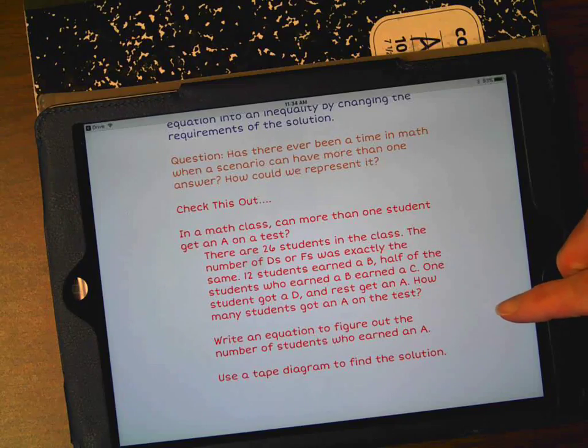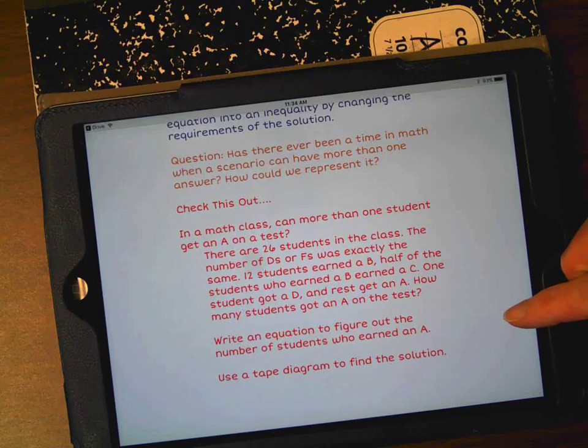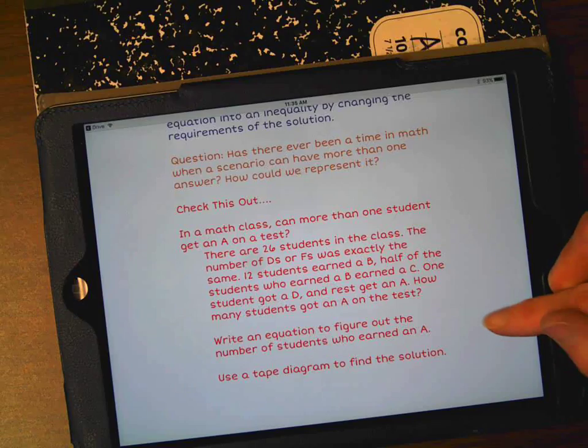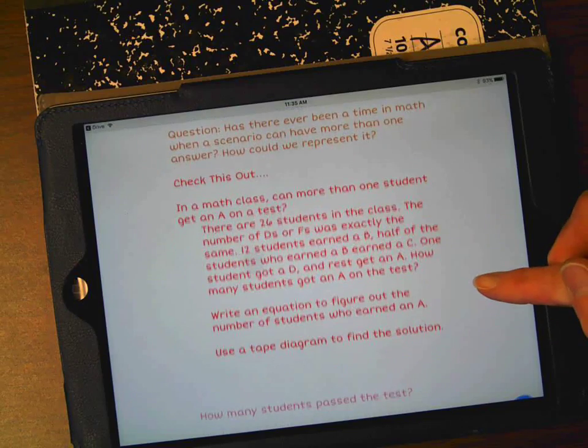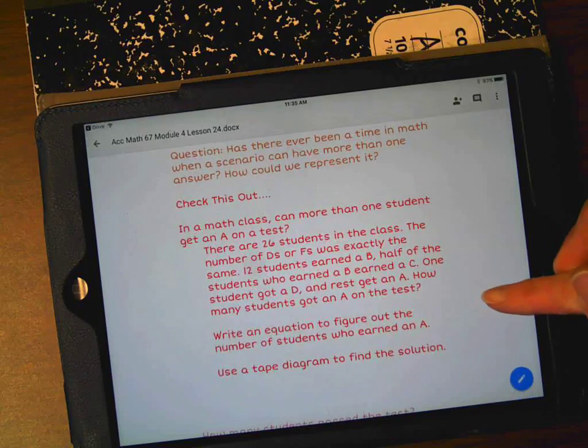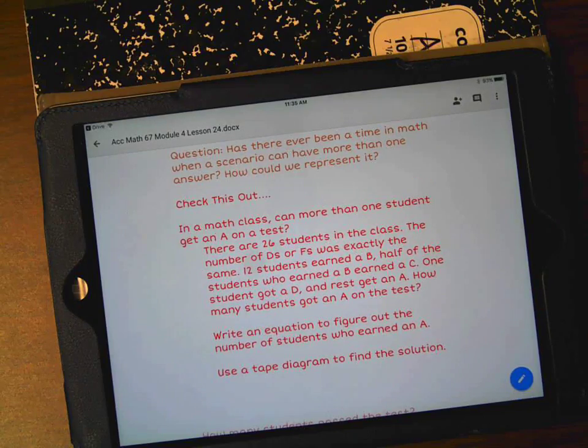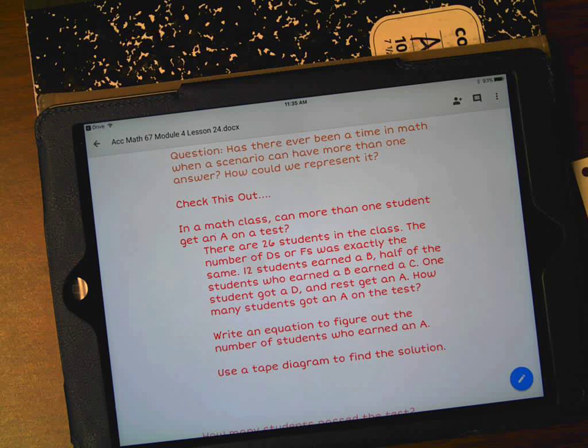12 students earned a B. Half of the students who earned a B earned a C. One student got a D, and the rest get an A on the test. How many students got an A on the test? Your job is to write an equation to figure out the number of students who earned an A, and then use the tape diagram to find the solution.